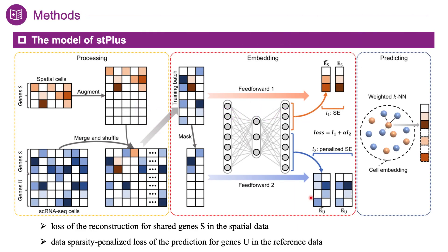The enhancement process of ST-plus can be divided into three main steps. First, data processing to prepare for joint embedding. Second, joint embedding of the single cells in spatial transcriptomic data and reference single-cell data. Third, predicting the expression of spatially unmeasured genes based on the cell embedding and reference data.